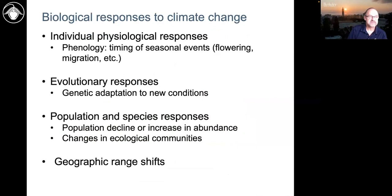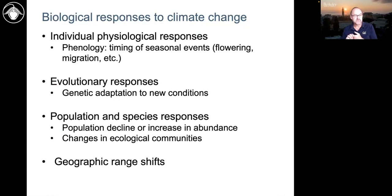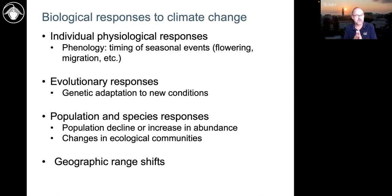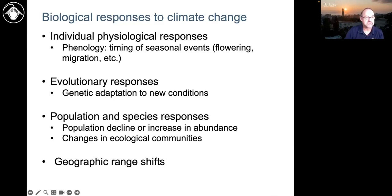When we think about biological responses to climate change, individual organisms respond physiologically — it could be just maintaining temperature in a heat wave, sweating, or a tree wilting and using more water. One really important response is phenology: as it gets warmer, we're seeing plants flower earlier, birds return from migration earlier, butterflies emerge earlier. This whole area of study — the timing of these events — is called phenology.